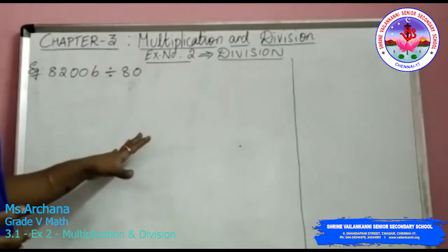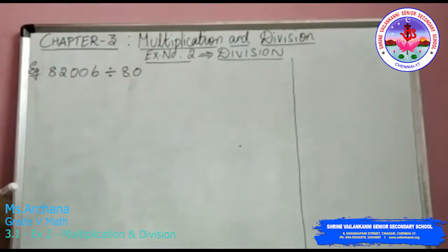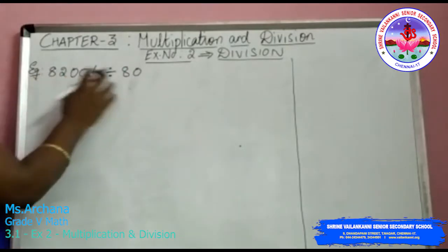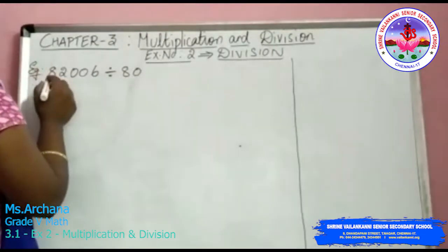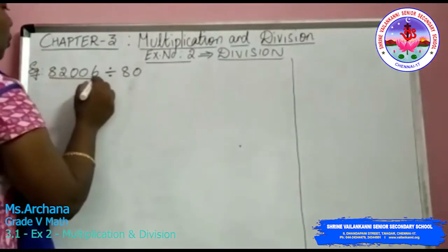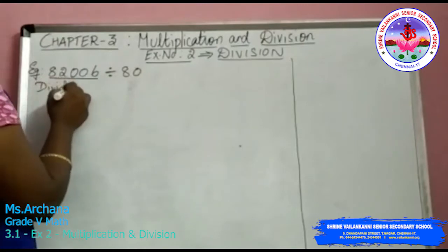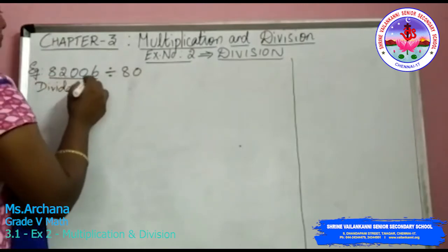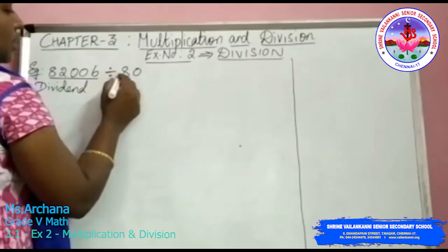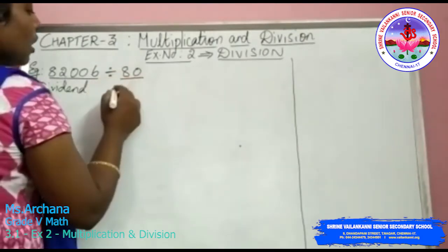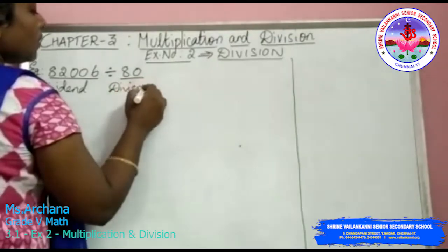We will just take a glance again to recall that division concept. So here I have written a sum to do division with a 2-digit number. So always the number which is given to you towards your left side, you will call it as dividend. And the number after the division symbol, which is given towards the right side, you will call it as divisor.